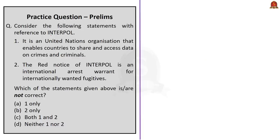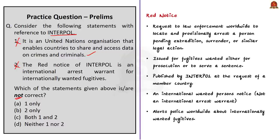The next question is about Interpol. It is a two-statement question asking which statements are not correct. The first statement says Interpol is a United Nations organization — this is not correct, because it is not a UN body. Interpol enjoys a special role as a permanent observer at the United Nations since 1996. The second statement says a Red Notice of Interpol is an international arrest warrant — also incorrect. A Red Notice is not an international arrest warrant but an international wanted person's notice that alerts police worldwide about internationally wanted fugitives. Since both statements are not correct, the correct answer is option C, both 1 and 2. Always be careful what the question demands.